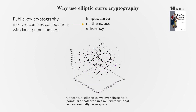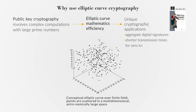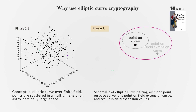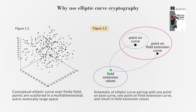Additionally, elliptic curves enable unique cryptographic applications, such as aggregate digital signatures and shorter transmission times for zero-knowledge proofs. Figure 1.1 illustrates cryptographic security, and Figure 1.2 illustrates the mathematical relationships leading to point pairing.